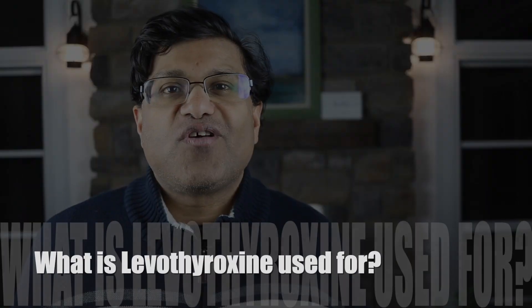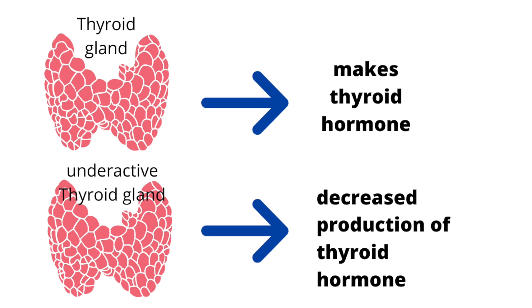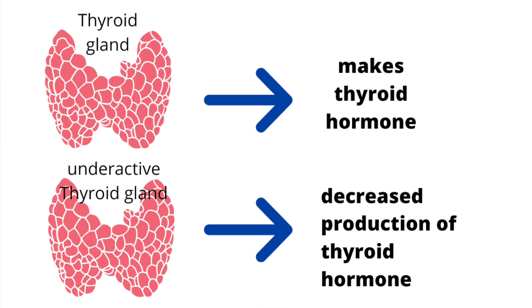What is levothyroxine used for? Levothyroxine is used to treat your underactive thyroid. Normally, your thyroid gland makes thyroid hormone. If that gland is underactive, it is unable to make enough thyroid hormone. Levothyroxine is a synthetic version of the thyroid hormone made by your gland. This medication can also be used in other types of thyroid disorders such as types of thyroid cancer or types of goiter.